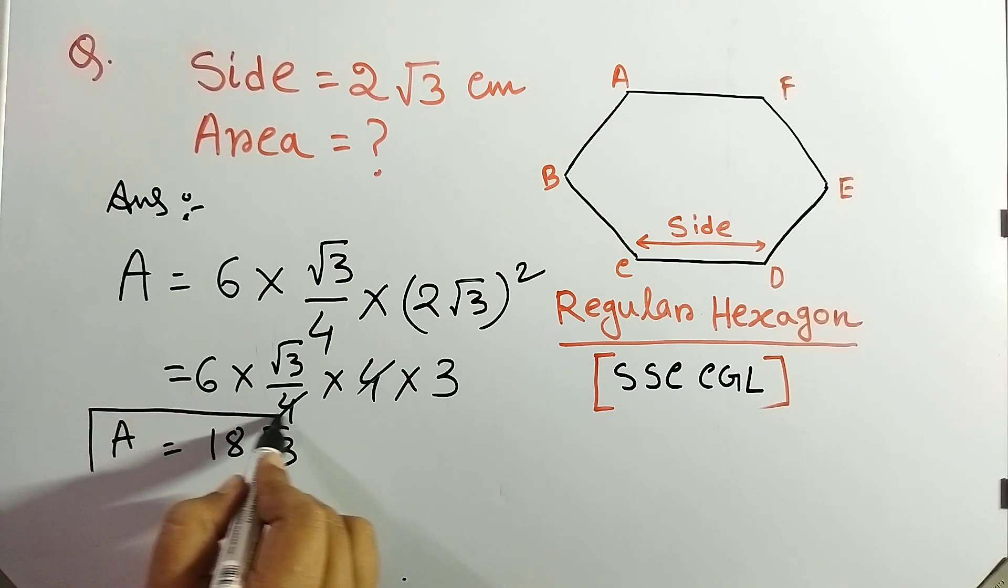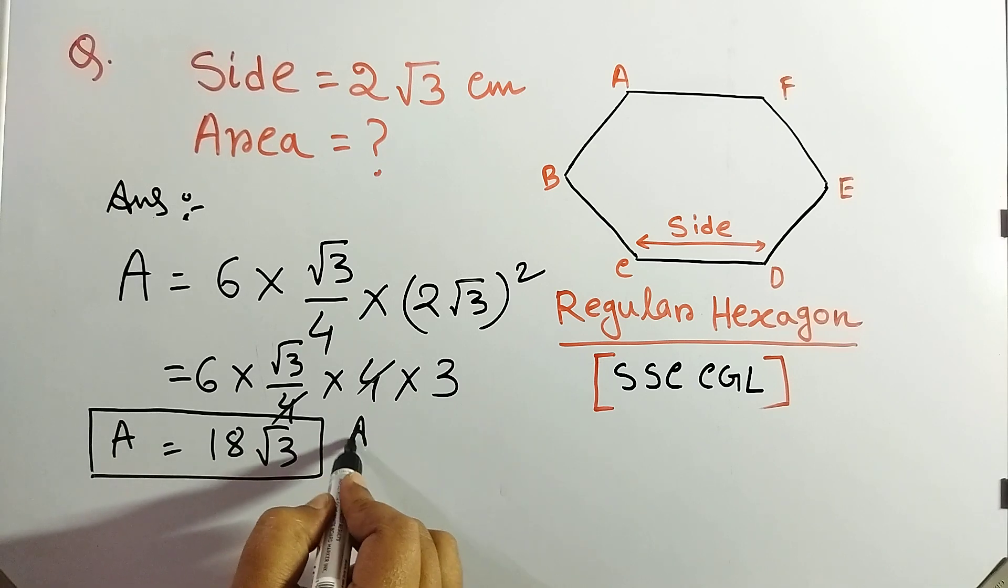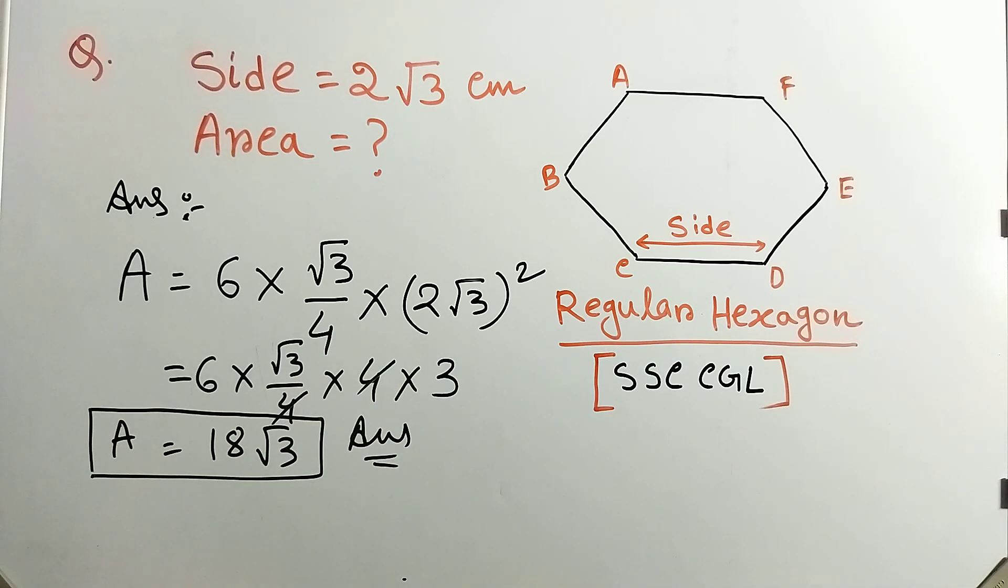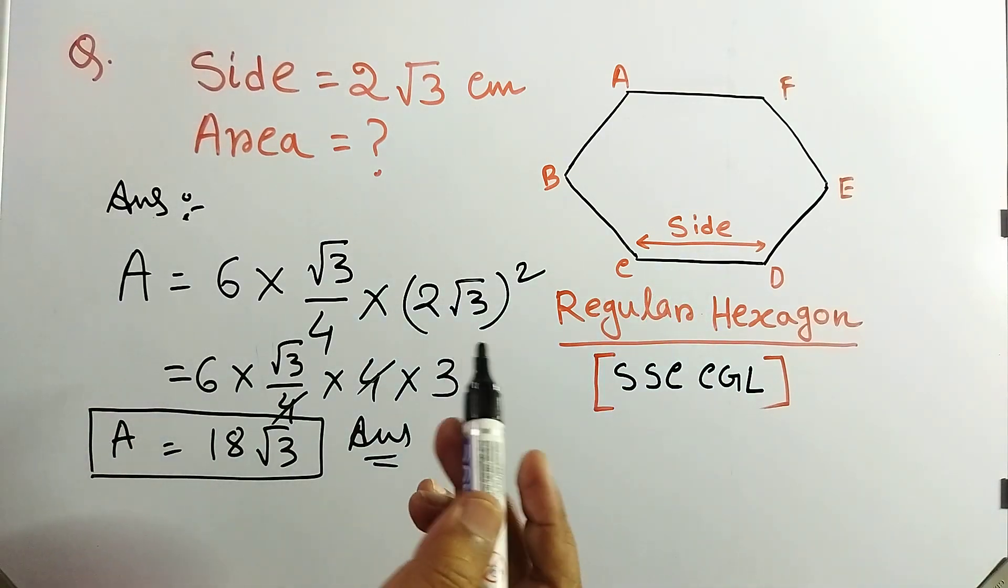So area is 18 root 3. So this is the area for this regular hexagon. So what is the formula? Formula is 6 into root 3 by 4 into side square. So if you know the value of side, you can find out the area of the regular hexagon.